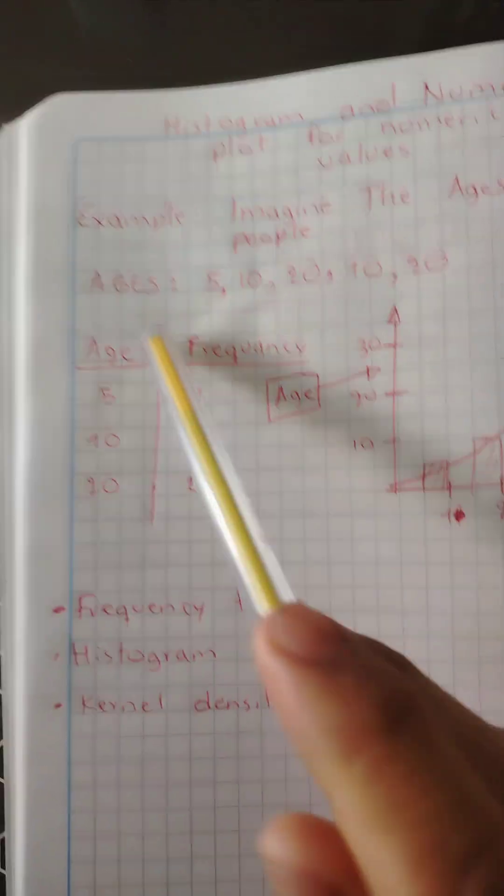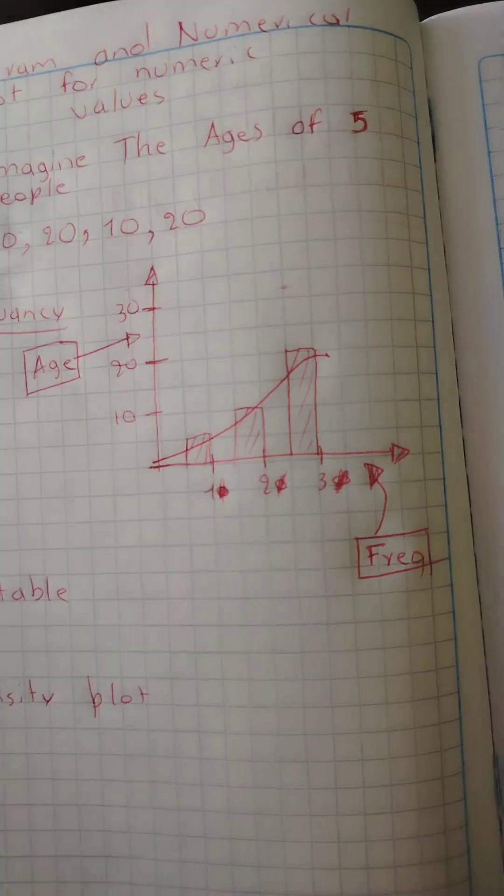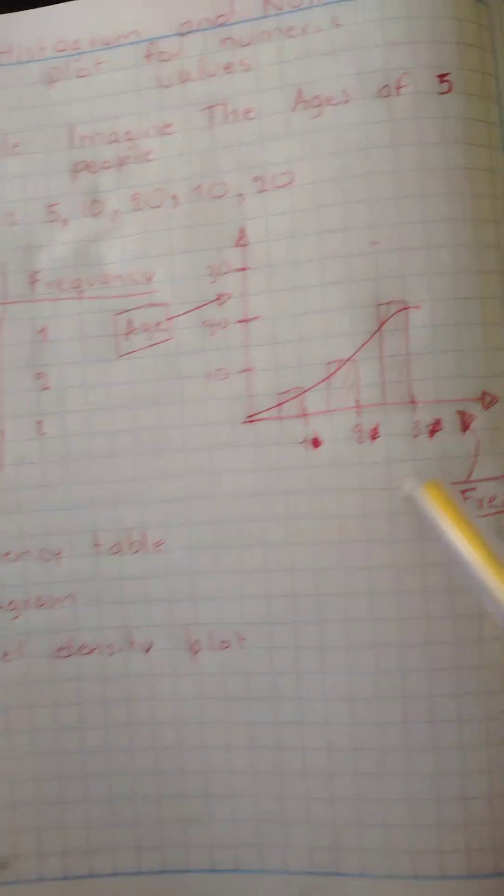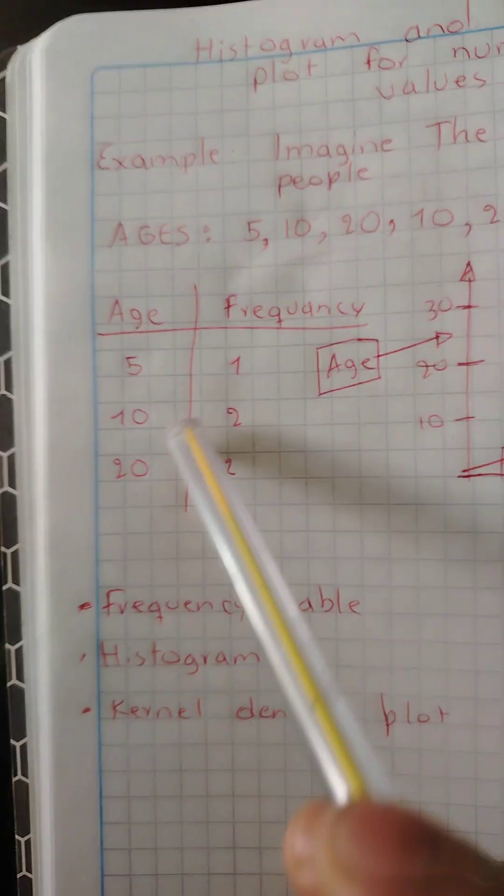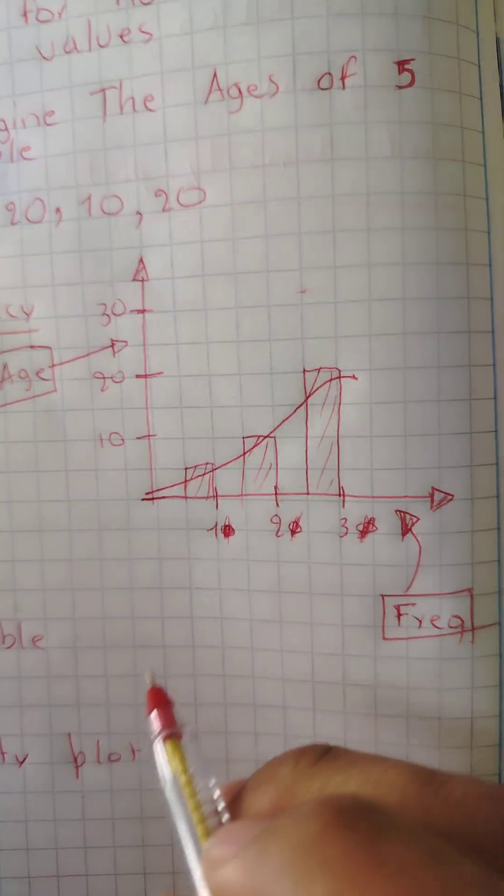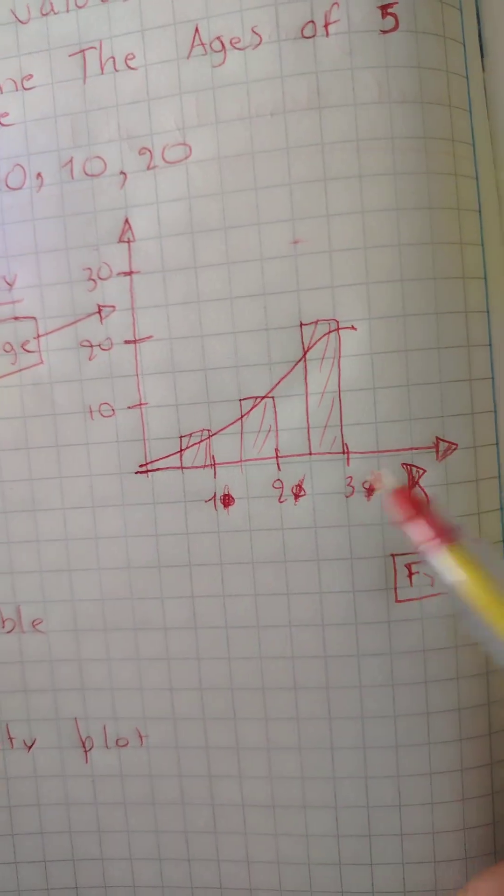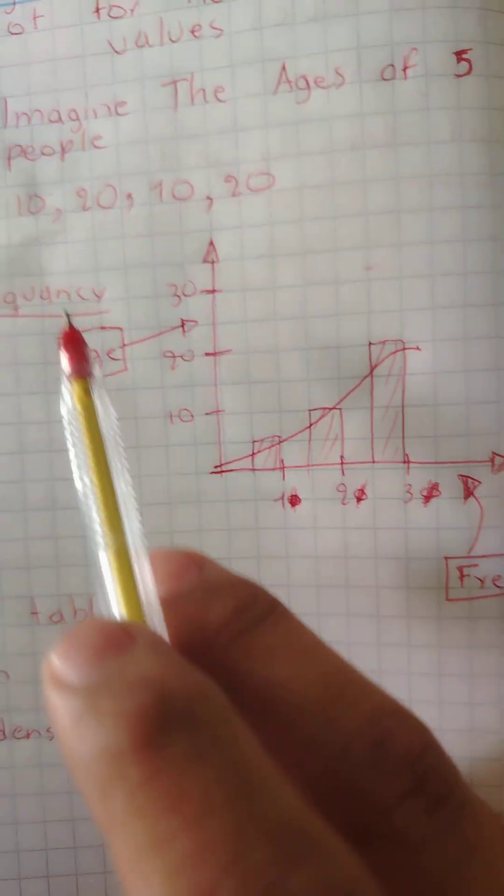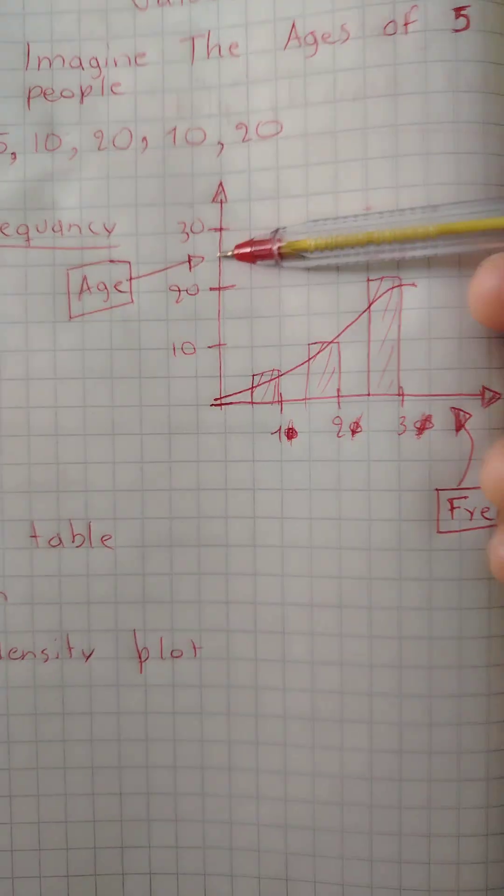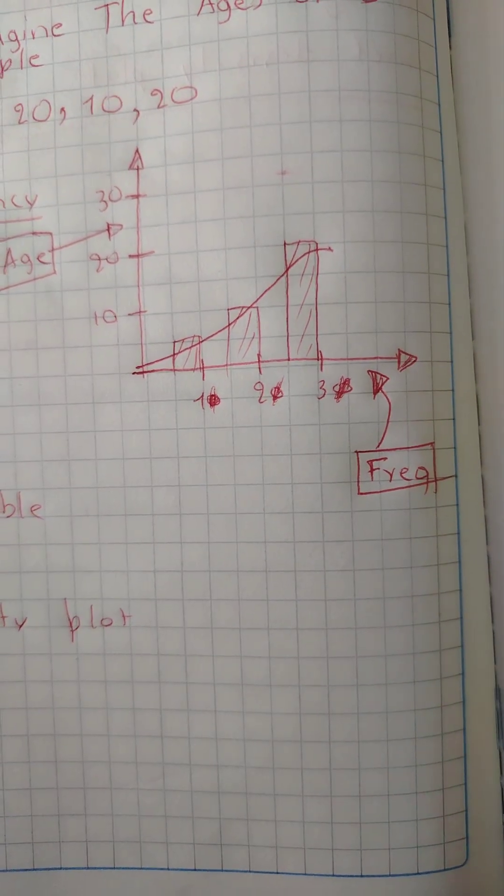To represent this frequency in relation to ages, we have a histogram. A histogram is a visual representation of this frequency table. We draw the vertical bars - these bars are the histograms. The ages are represented on the y-axis, and the frequency is on the x-axis.